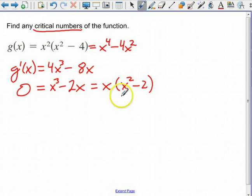So it looks like we're going to have three critical points. We're going to have a point at x equals 0 from that factor. And plus or minus the square root of 2 when I factor that out. So we have three critical numbers: x equals 0, x equals positive root 2, and x equals negative root 2.